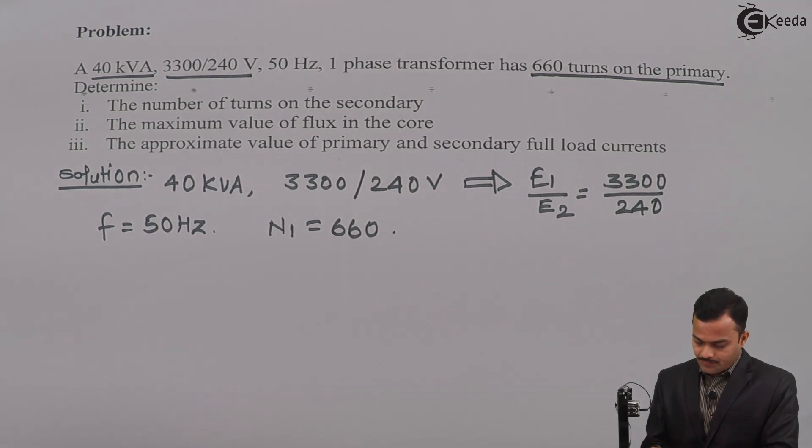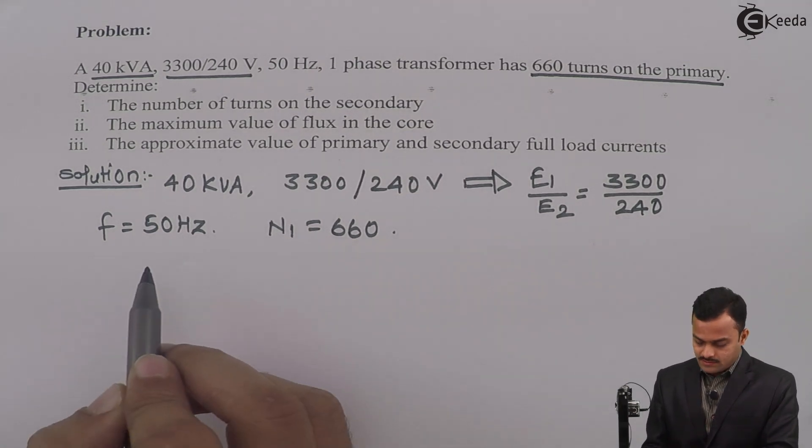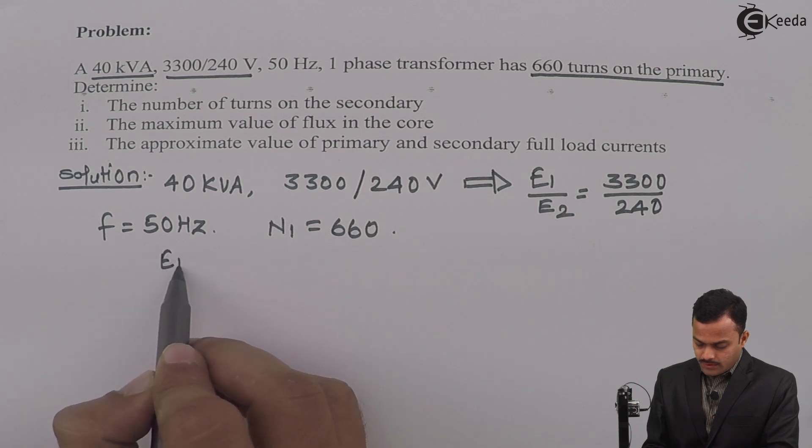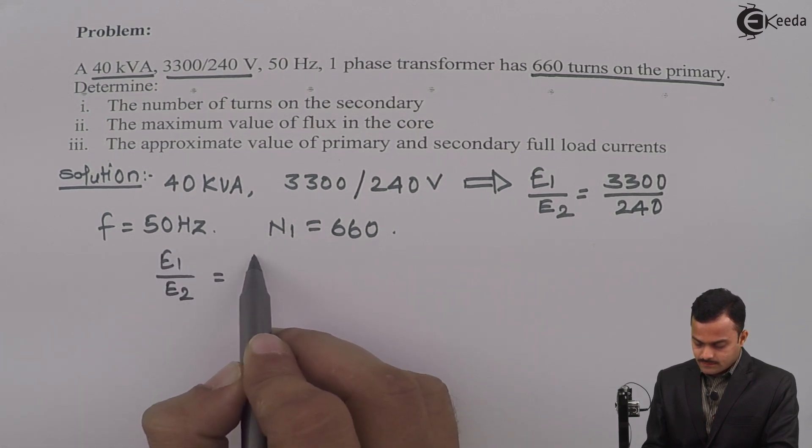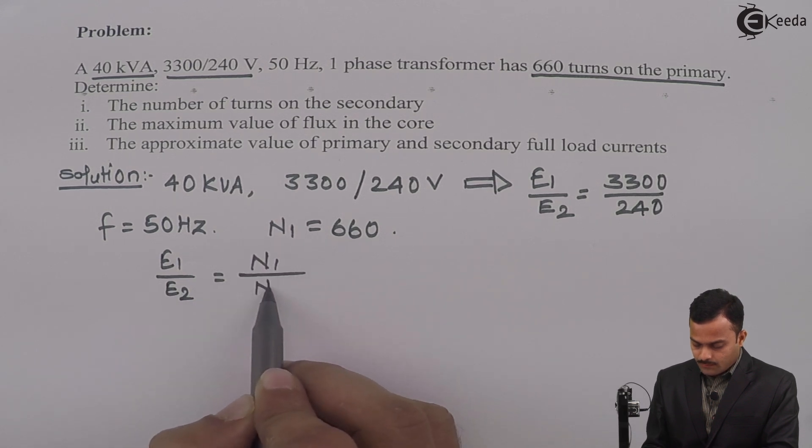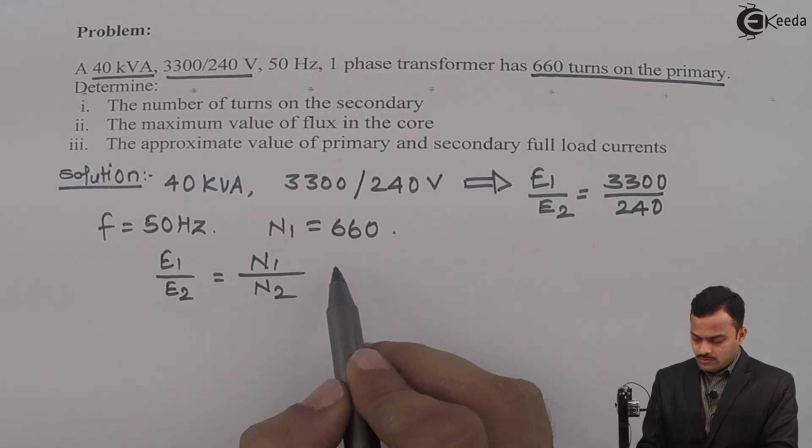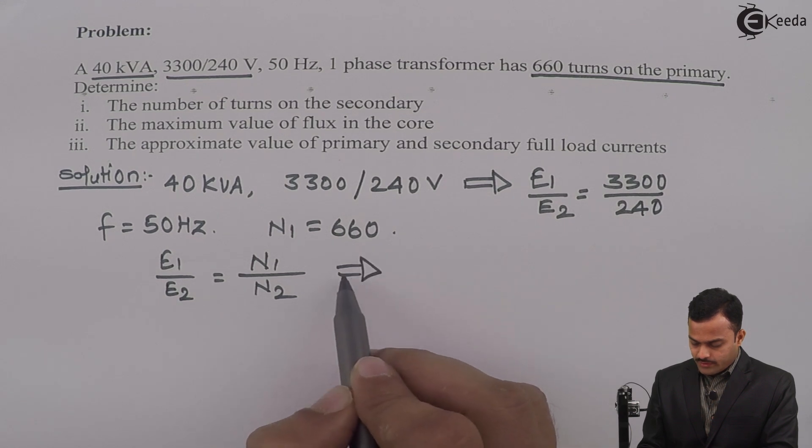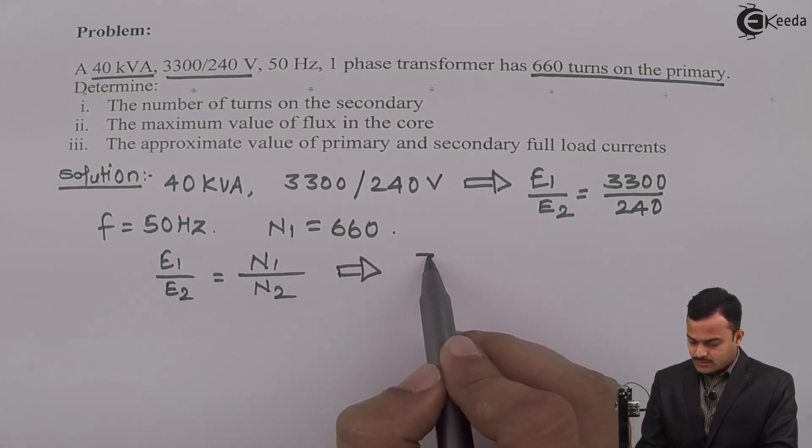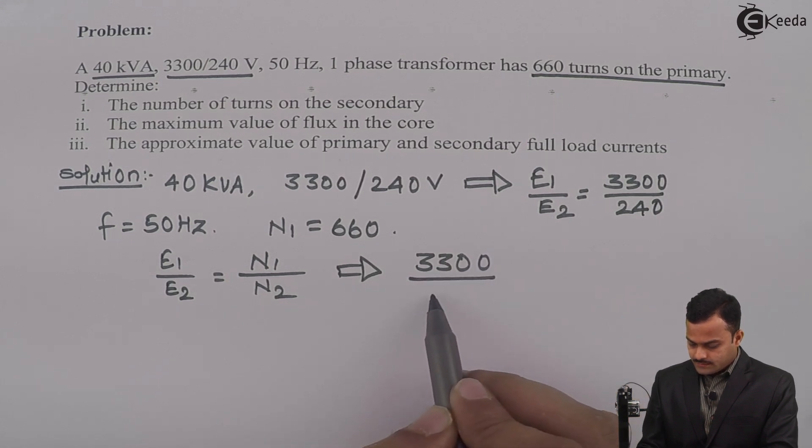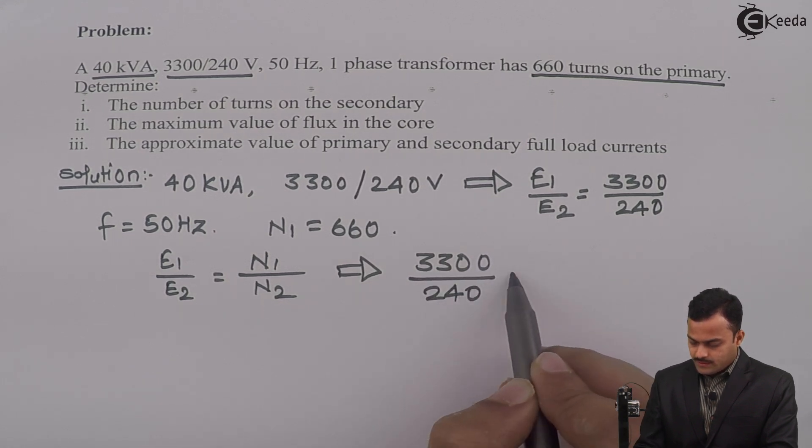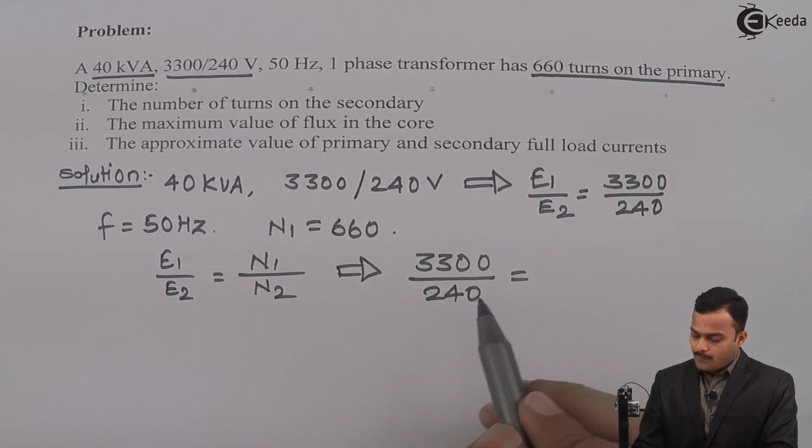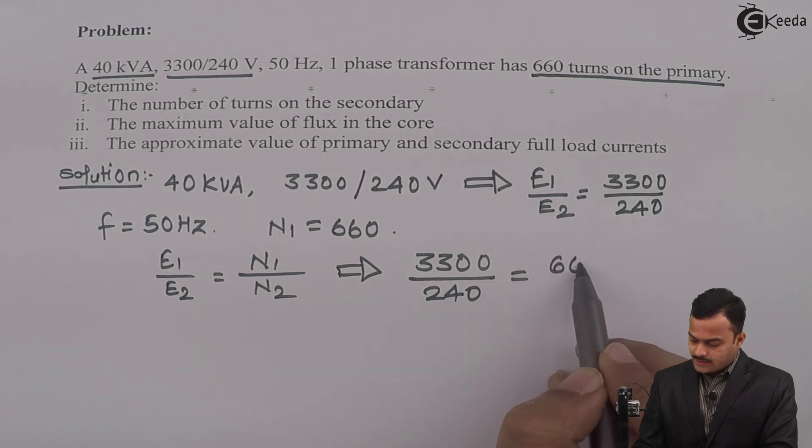So it's a very simple problem. What I will do first? We know E1 upon E2 is same as N1 upon N2. So maximum things are given over here, meaning E1 by E2 is 3300 divided by 240 equal to number of turns on primary side is 660. N2 is the unknown.